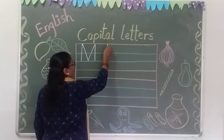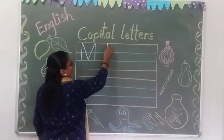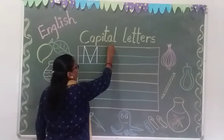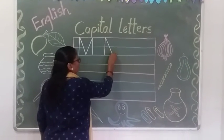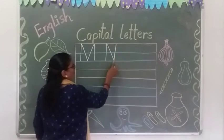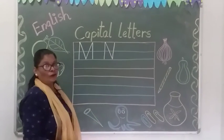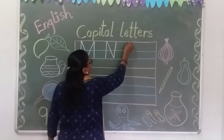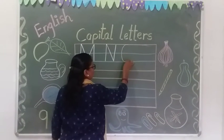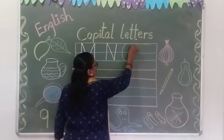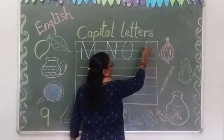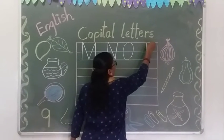The next letter is N — red line to second blue line, one standing line, then standing line, and standing line, down to up. N for nose. O for octopus. And P for pan, P for parrot.